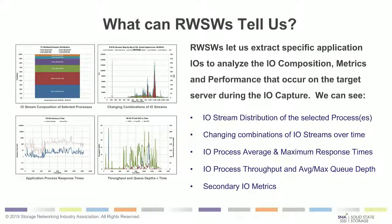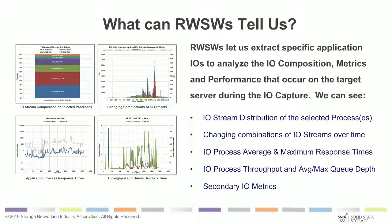This tool is going to be able to tell us many things: the IO stream distribution of various processes, the changing combinations of IO streams over time, throughput, average and max queue depth, various secondary metrics, and different response times. From a variety of levels, this tool allows you to make more intelligent decisions about how to configure your system or device to best respond to the needs of the real world.